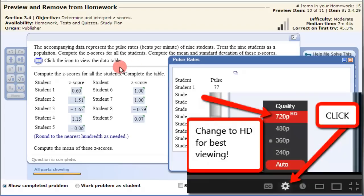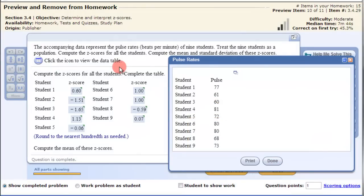In this video we look at some data and then find the z-score of each data value. This example shows the pulse rate in beats per minute of nine students. Treat the nine students as a population and compute the z-scores of all nine students.